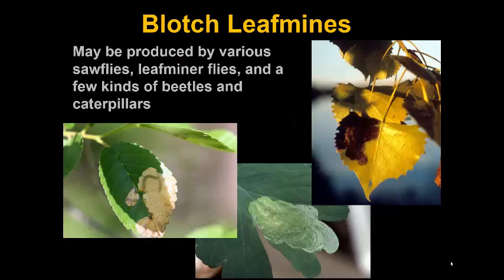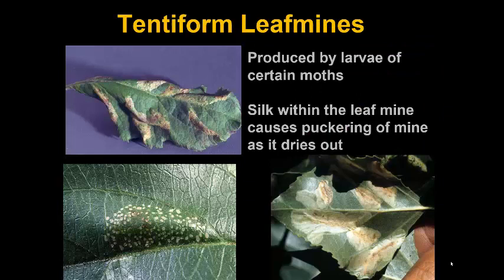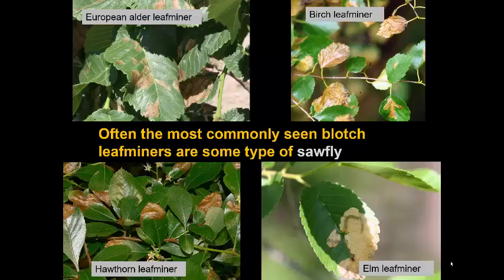Blotch leaf mines are produced by various kinds of sawflies, leaf miner flies, and a few kinds of beetles and caterpillars — pretty much every group might have some that produce a blotch leaf mine. There's a special kind of blotch leaf mine called the tentiform leaf mine, where it kind of puckers up afterwards, and these are produced by a group of moths.